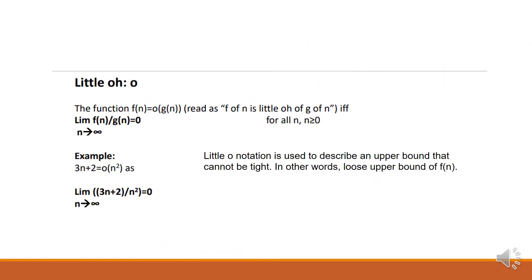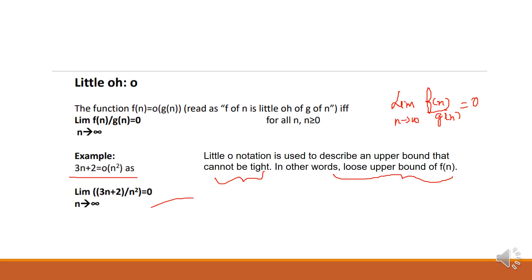Little o notation: f(n) = o(g(n)) if and only if the limit as n tends to infinity of f(n)/g(n) = 0. Little o is used to describe an upper bound that cannot be tight — it is a loose upper bound of f(n). For example, 3n + 2 ∈ o(n²): the limit as n→∞ of (3n + 2)/n² equals 0, confirming this.